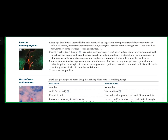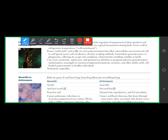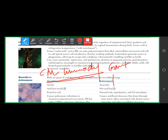Moving to Listeria monocytogenes: this is a facultative intracellular rod, significant in patients with cell-mediated immunodeficiency. Key characteristic features to recognize in questions: rocket tails (actin rockets), and tumbling motility at 22°C.